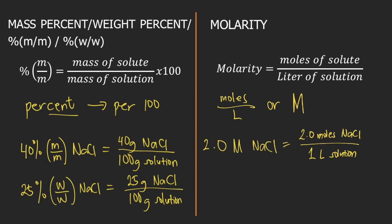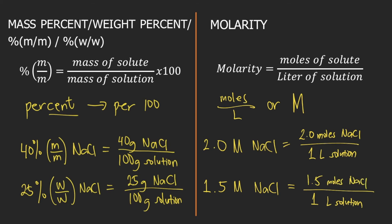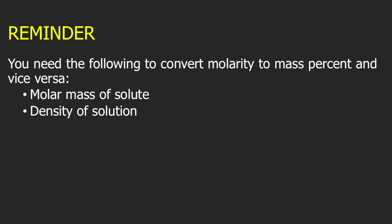Another example: if you are given 1.5 molar of NaCl, this means that for every one liter of solution, you have 1.5 moles of NaCl. To convert molarity to mass percent and vice versa, you need two things: number 1 is the molar mass of the solute — if it's not given, you need to compute it yourself. Number 2 is the density of the solution, which must be provided in the problem.